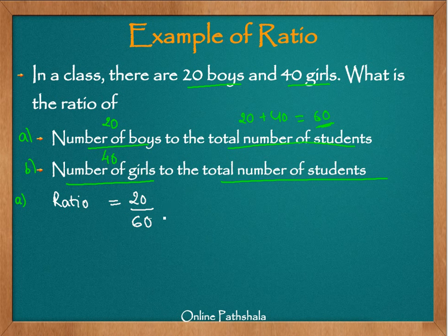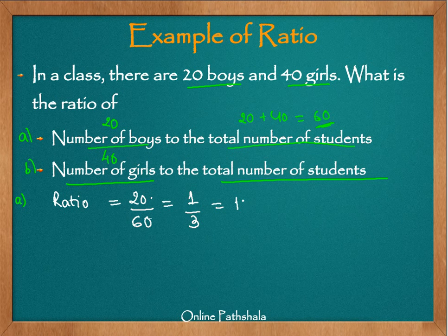We go a step further and simplify this, trying to bring numbers as low as possible. Looking at 20 and 60, both can be divided by 20. Dividing the numerator by 20 gives 1, and dividing the denominator by 20 gives 3. So we get a ratio of 1 by 3, or in ratio form, 1 is to 3.